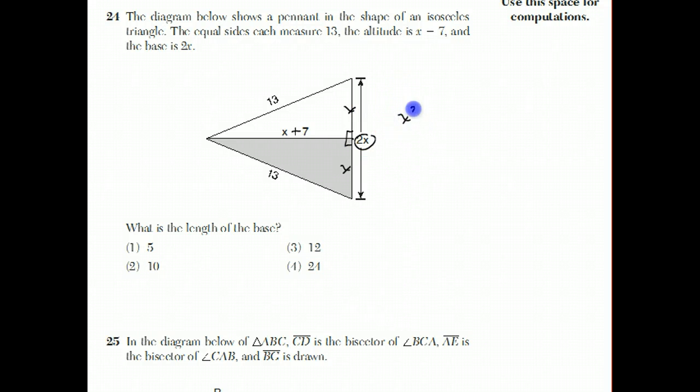Now we can use the Pythagorean theorem to solve this. Pythagorean theorem says that if you take the square of the two legs and add them together, it will equal the square of the hypotenuse. x plus 7 squared is x plus 7 times x plus 7. 13 squared is 169.